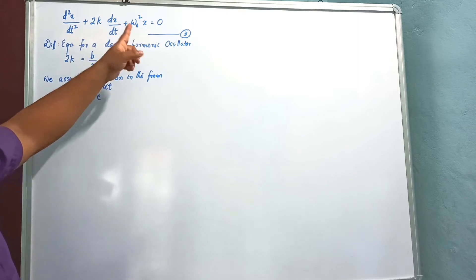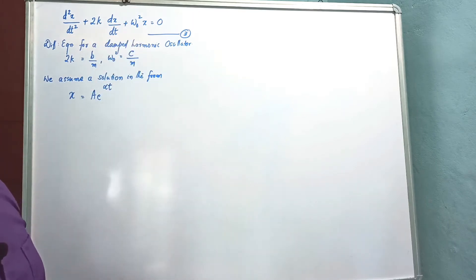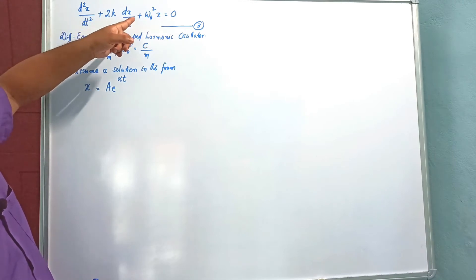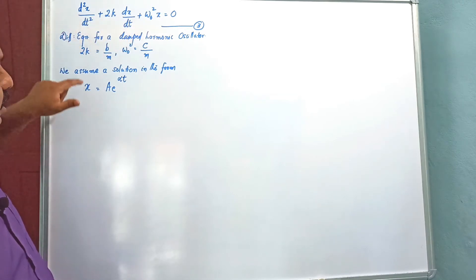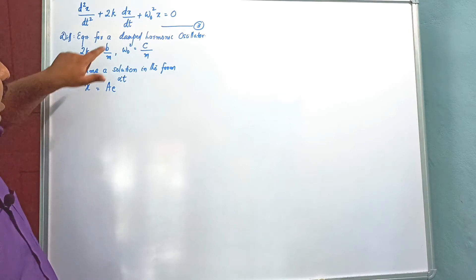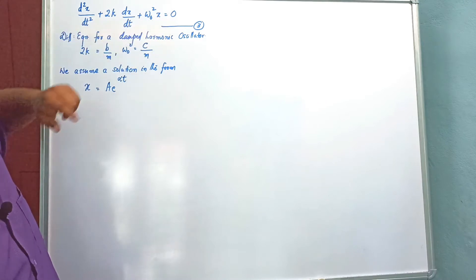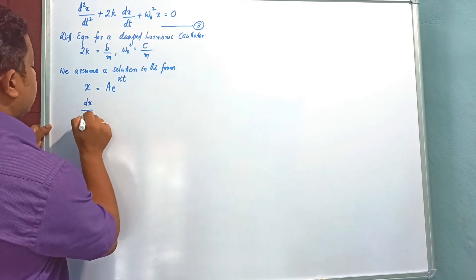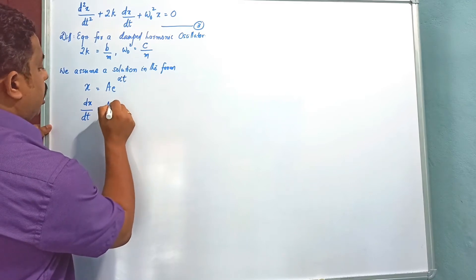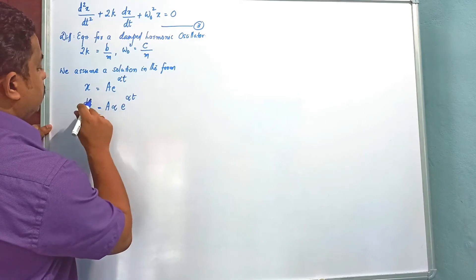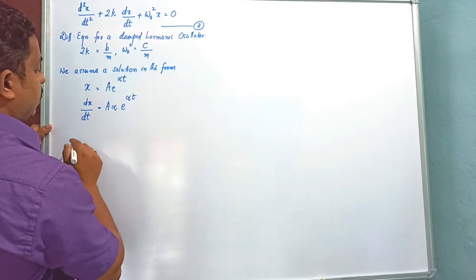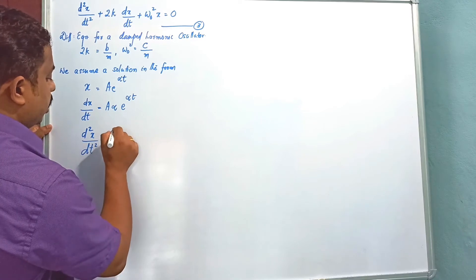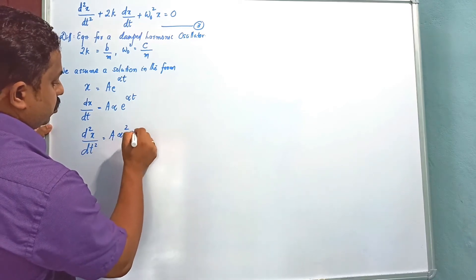You may have studied how to solve this kind of differential equation in your plus-2 classes, or you will be studying it in the coming days. If x = Ae^(αt) is a solution, then the equation should be satisfied when we substitute. So we need dx/dt = Aα·e^(αt), and d²x/dt² = Aα²·e^(αt).